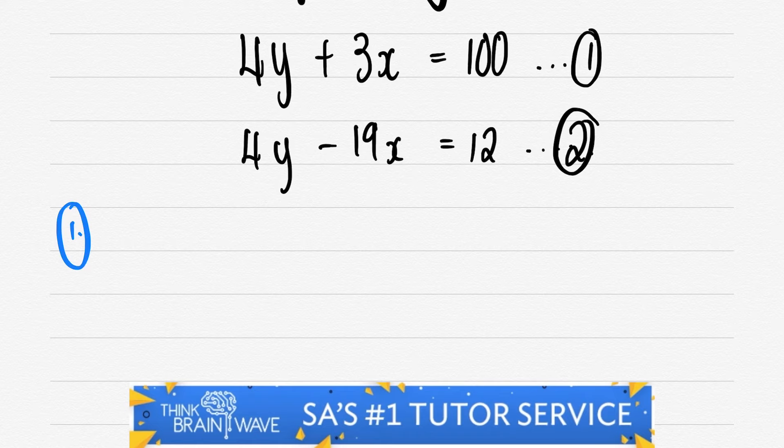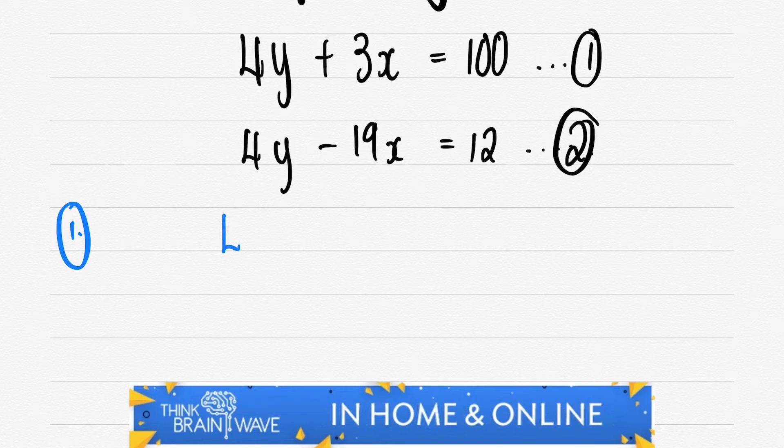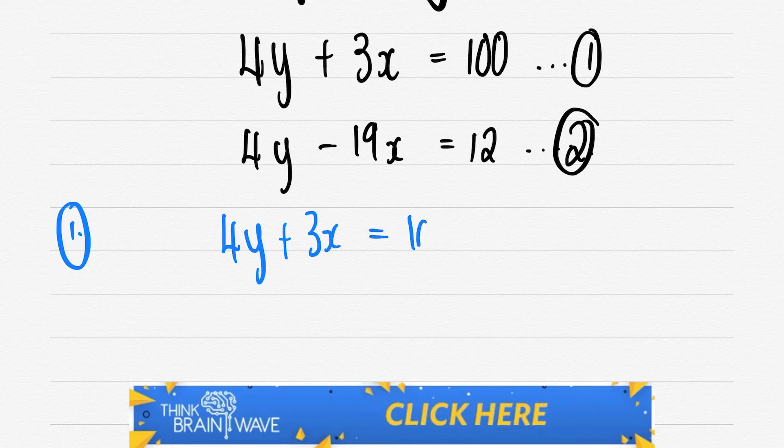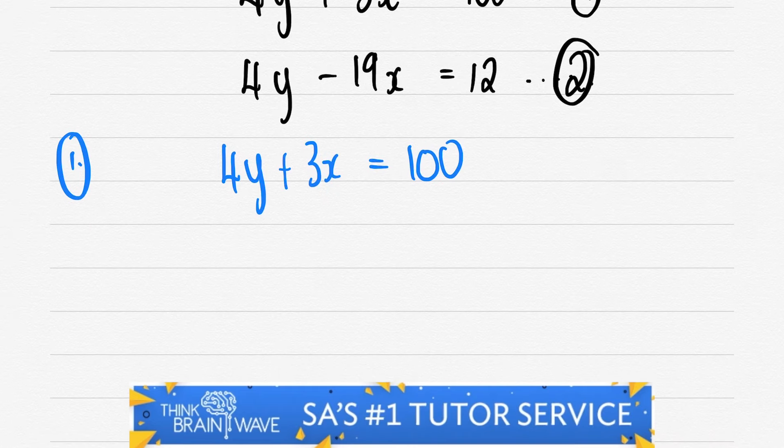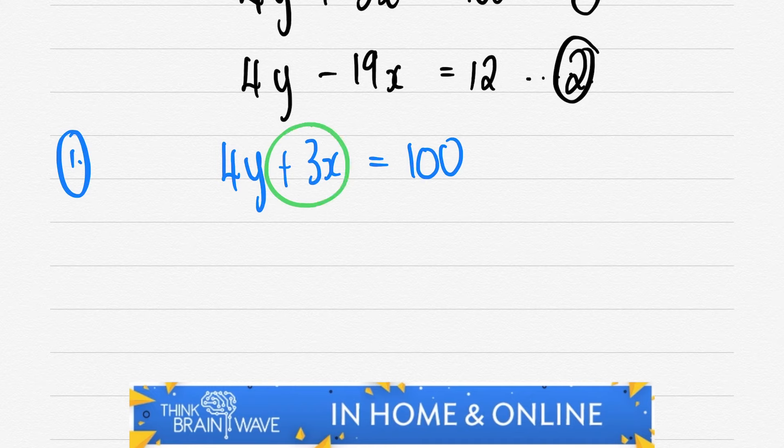What's our first step? It's always going to be the same. What do we do? We write down our equation and we try and isolate one of the variables. Okay, so which one are we going to choose? Think about it. Okay, we'll choose 4y.